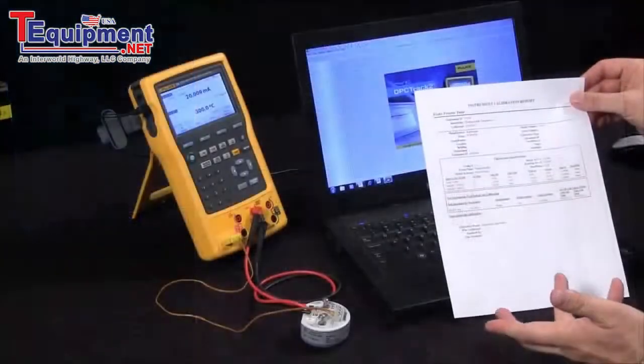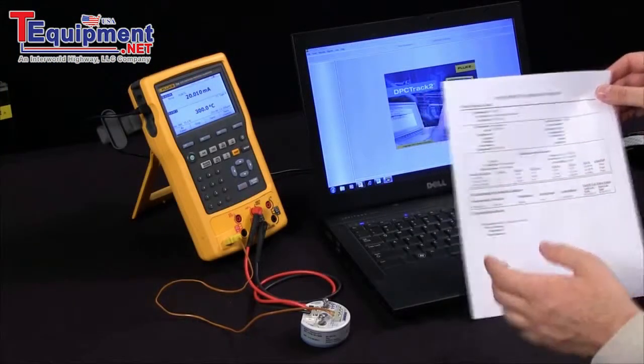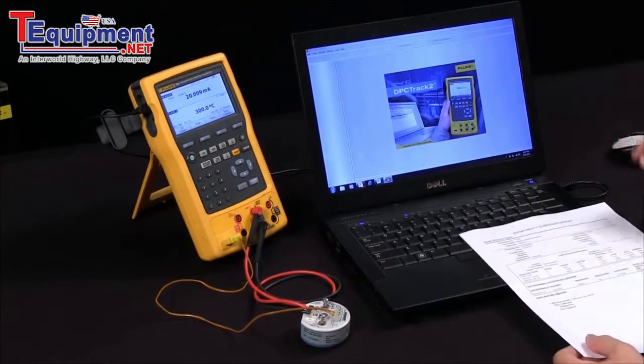This is just a very brief overview of the capabilities of the 754 when used with the DPC track 2 software.